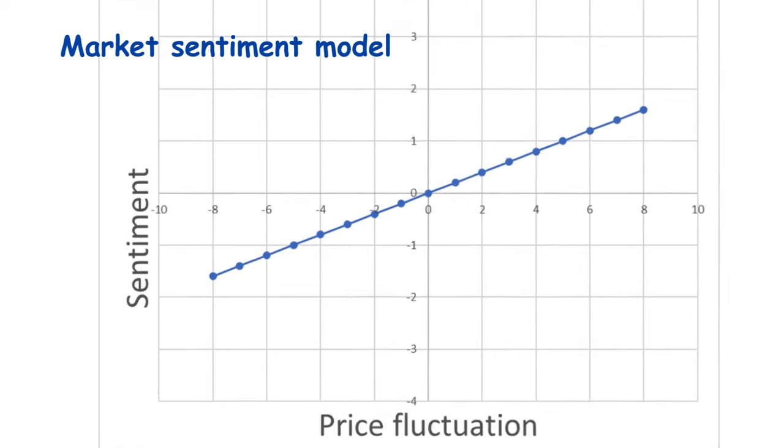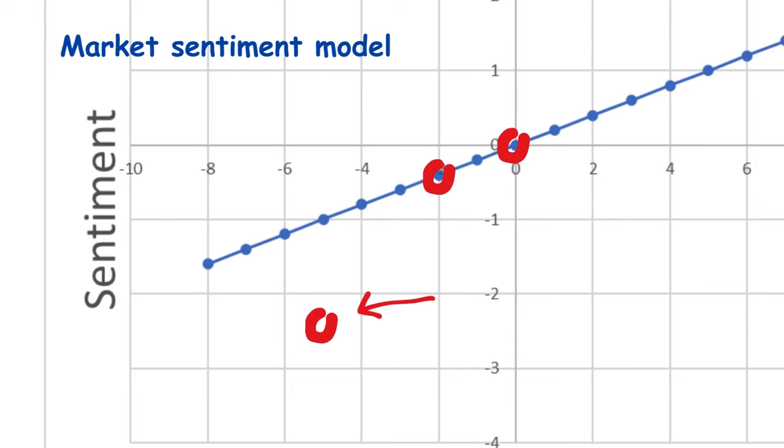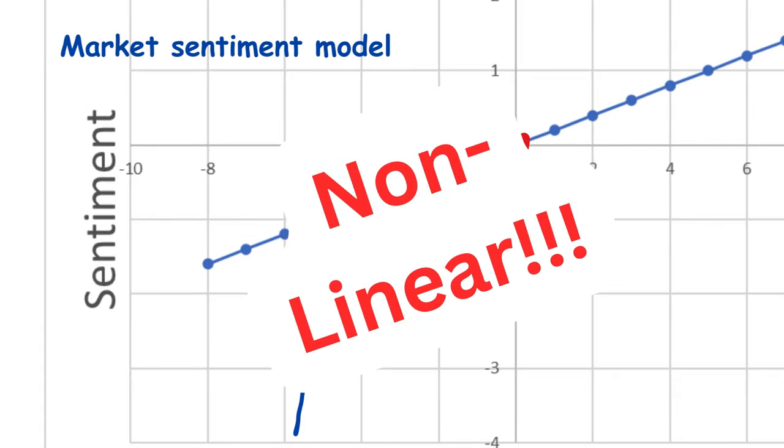So, I might put my sentiment level down here. But then, this is no longer a straight line. So, my sentiment is no longer in proportion to the fluctuation in price. That is, it has become non-linear.